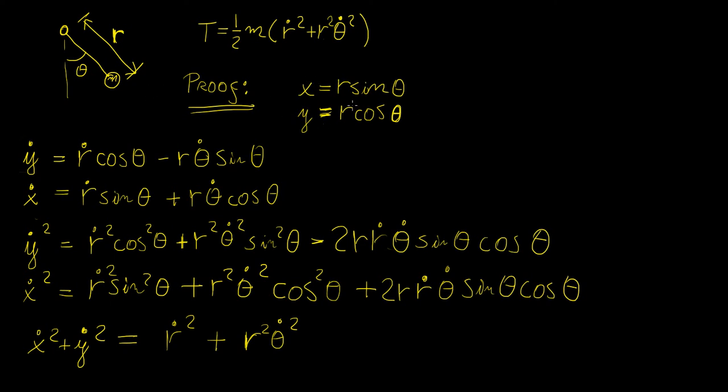We had x equals r sine theta, y equals r cosine theta. Now, assuming that the radius is a function of time, so it varies with time, what we can do is we can differentiate things. So basically we're going to apply the product rule of differentiation. And we should be able to get to this expression here.